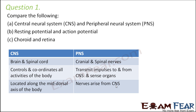Let us start with the central nervous system and the peripheral nervous system. The central nervous system is composed of brain and spinal cord, whereas the peripheral nervous system is made up of all the nerves which connect the central nervous system to different parts of the body — those nerves being cranial and spinal nerves. The central nervous system controls and coordinates all the activities of the body because the brain and spinal cord have the brain matter where exact processing of signals takes place. Whereas the peripheral nervous system only has nerves and their job is to carry impulses from one place to another — transmitting impulses from the CNS to the sense organs or from sense organs to the CNS.